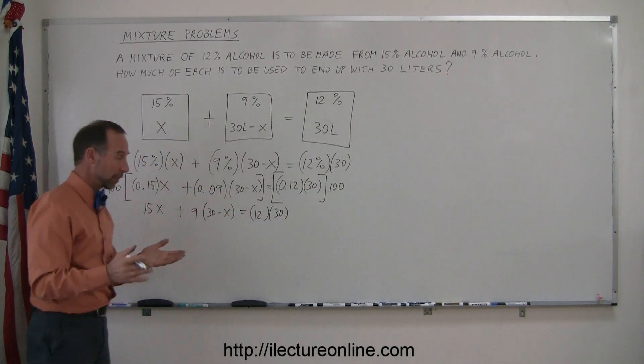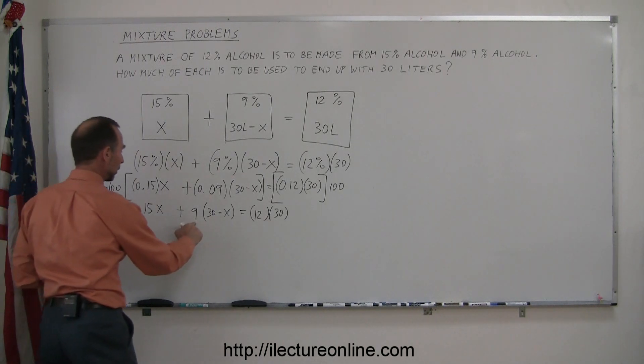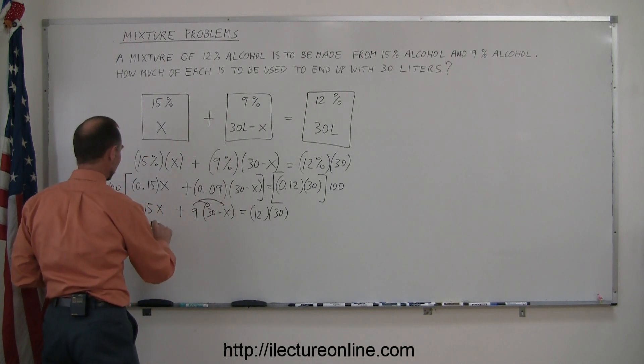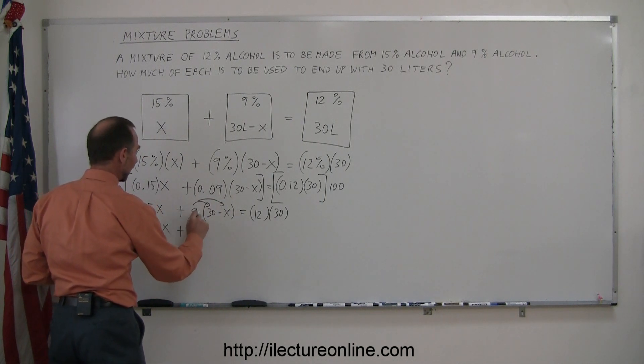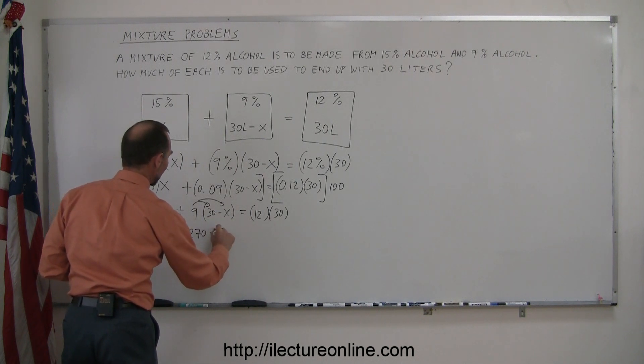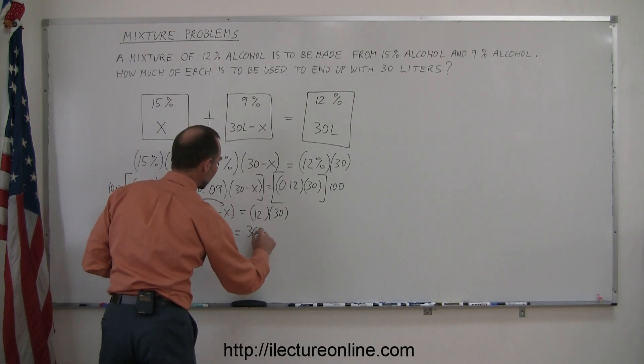Now all we have left to do here before we can finally solve that equation, let's get rid of the parentheses. So we multiply the 9 times both the 30 and the X. So we get 15X plus 9 times 30 is 270, 9 times a minus X is a minus 9X, equals 12 times 30 is 360.